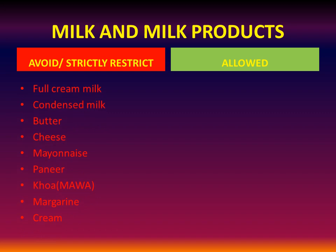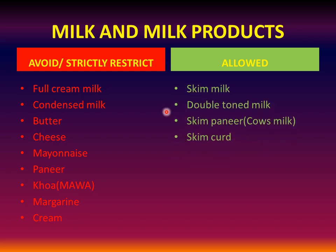Milk and milk products: full cream milk, condensed milk, butter, cheese, mayonnaise, paneer, khova, margarine, and cream have to be totally avoided or strictly restricted. Allowed are skimmed milk, double-toned milk, skimmed paneer made from cow's milk, and skimmed curd.